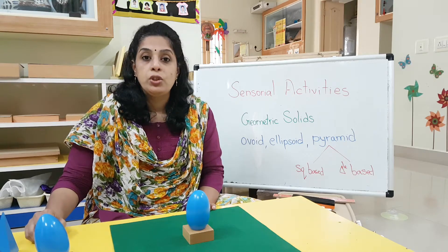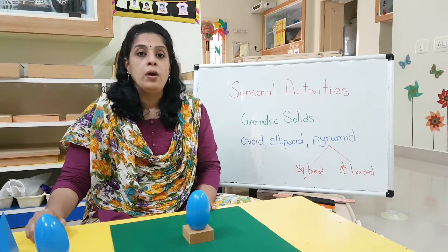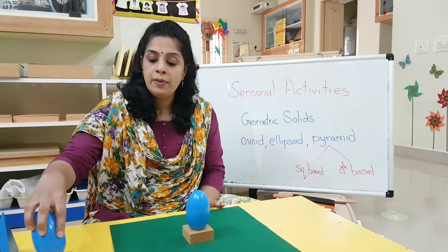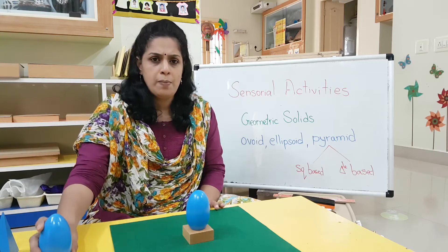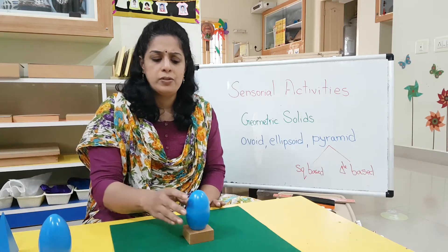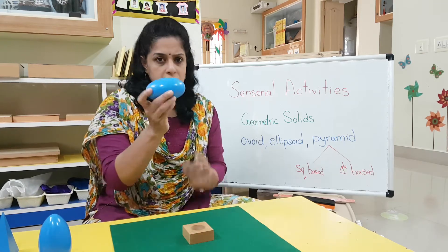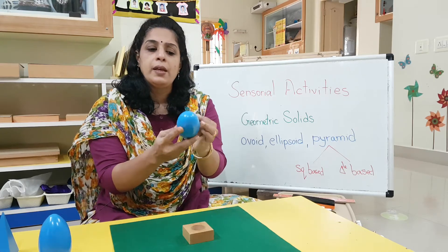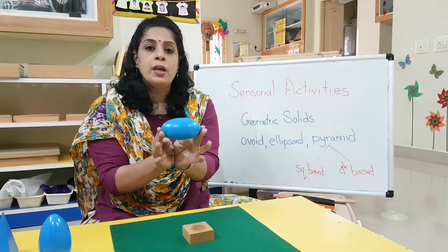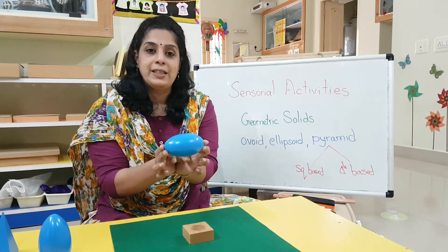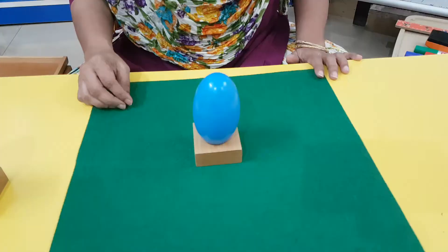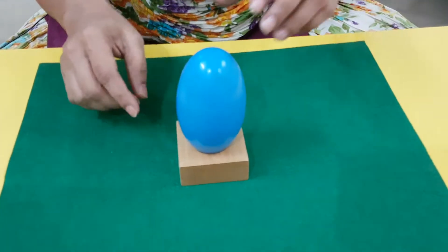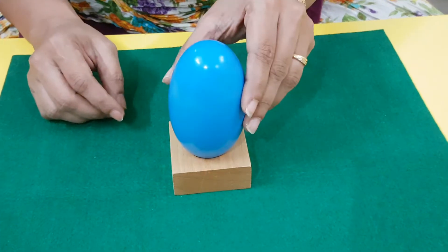Now I am going to introduce to you the last set — just four names you will have to remember. Very easy. You would have come across this first shape. Take a look at this shape; you can also come take a closer look at it.